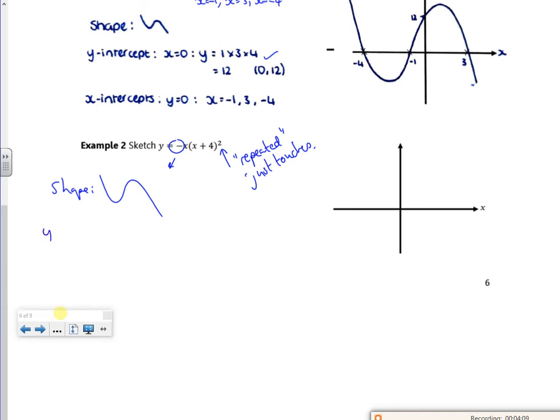For the y-intercept, if I put x = 0, that gives me y = 0. And then for the x-intercept, if I put y = 0 into poly, it'll give me 0, but it'll also give me -4 twice.